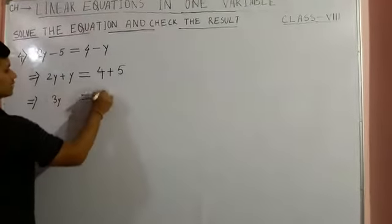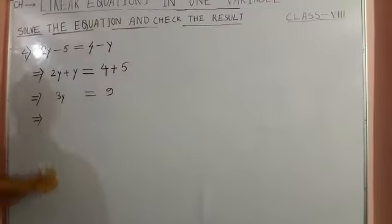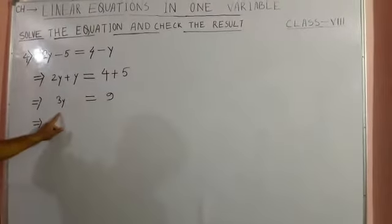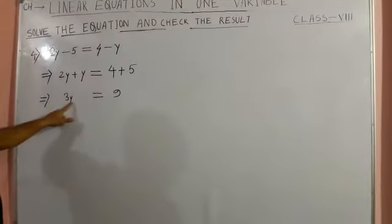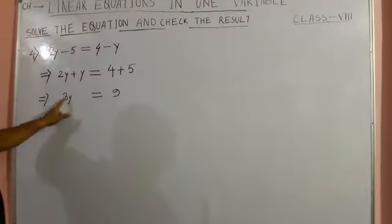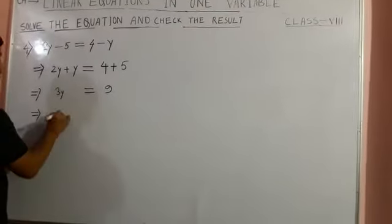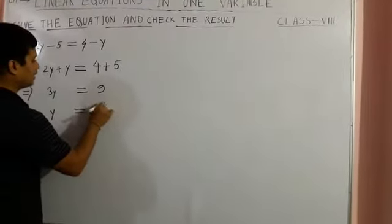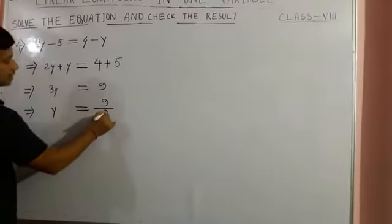2y plus y is equal to 3y. 4 plus 5 is 9. Now in further manipulation you see, 3 is multiplying with y. When we transpose to the right hand side it will be 9 divided by 3, and we can say 3 times 3 is 9.